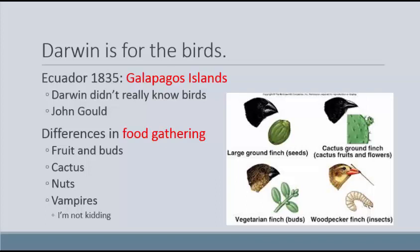He noticed major differences in food gathering. Some birds eat fruit and buds of flowers, some eat cactuses, some eat nuts, and some of them were actually functioning vampires — the birds would fly up to other birds, peck them in the neck, and drink their blood. Super creepy but true. In all of these differences in feeding, he realized that each bird had a variable beak that made it best for its particular food choice.